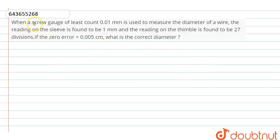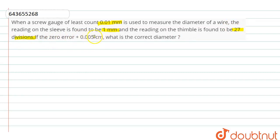Hello dear students. The question is: when a screw gauge of least count 0.01 mm is used to measure the diameter of a wire, the reading of the sleeve is found to be 1 mm and the reading of the thimble is found to be 27 divisions. If the zero error is plus 0.005 centimeter, then what is the correct value of the diameter?